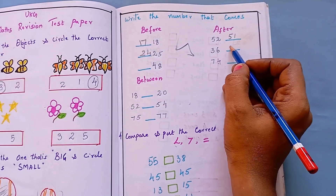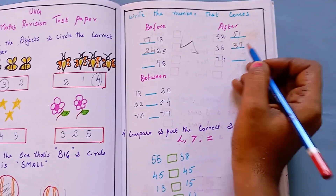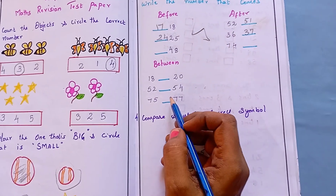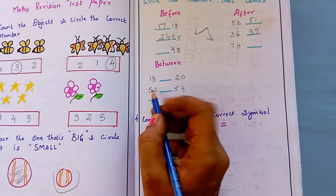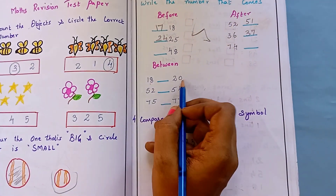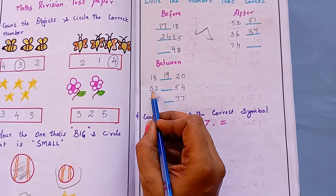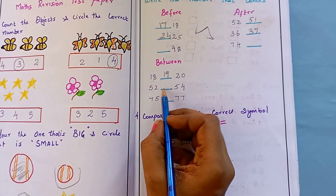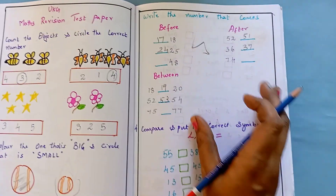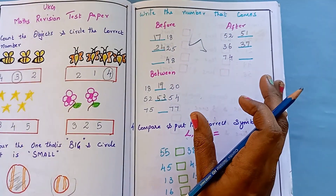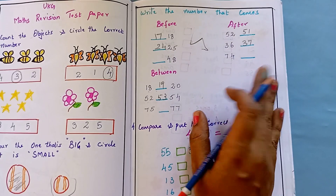After 26, that is 27. Here they have to find the number that comes between two given numbers. This is 18 and 20 — in between comes 19. And this is 52 and 54 — here comes 53. Like this, the kid has to find what comes before, after, and between, and write the answers.